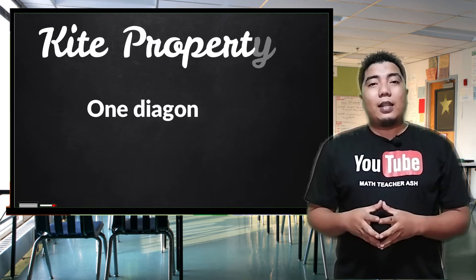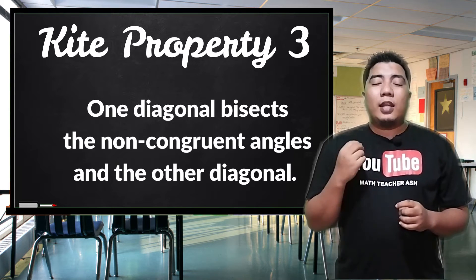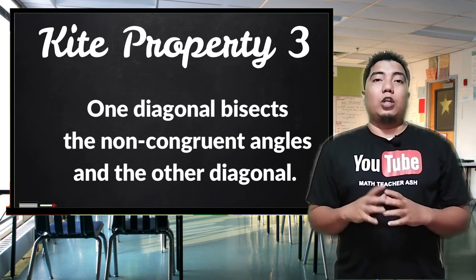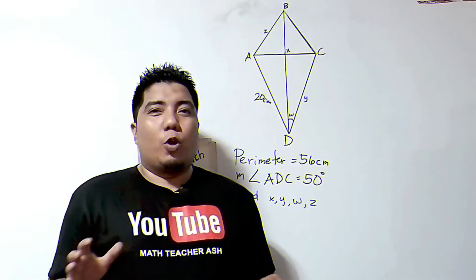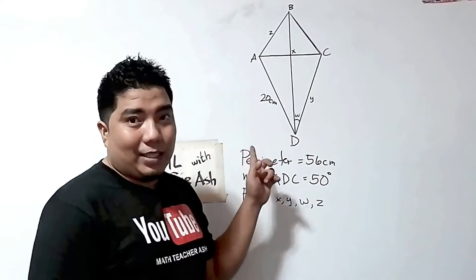The third property of a kite is that only one diagonal bisects each of the non-congruent angles as well as its other diagonal. Now, to further learn about how to apply these different properties, let us now solve some problems involving kites. Okay math learners, we are now in our first problem regarding kites.